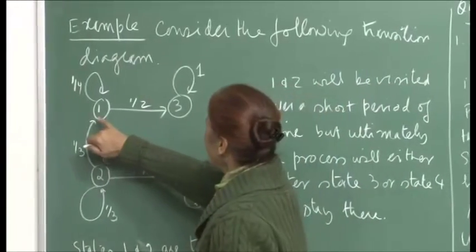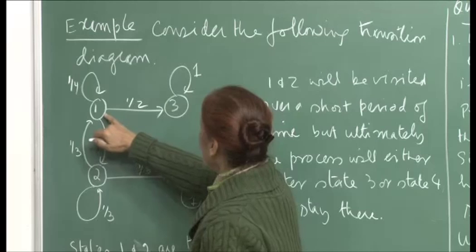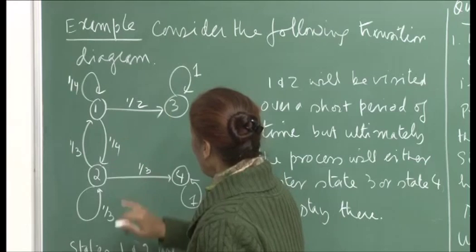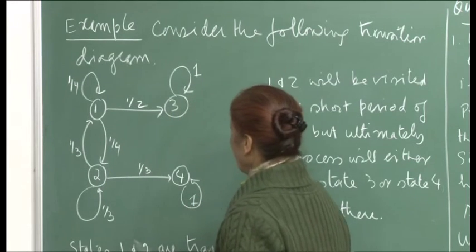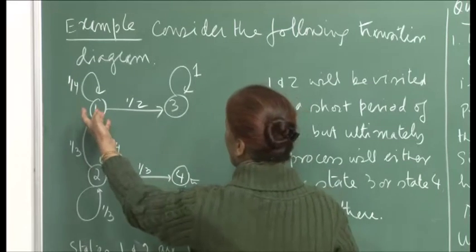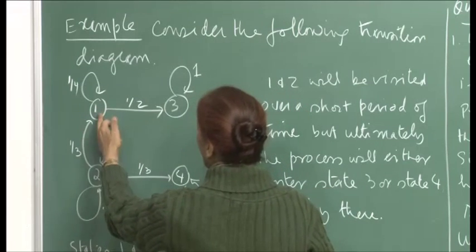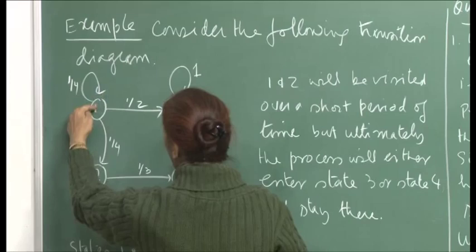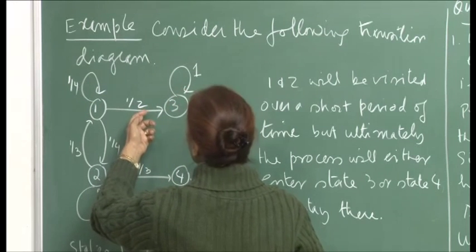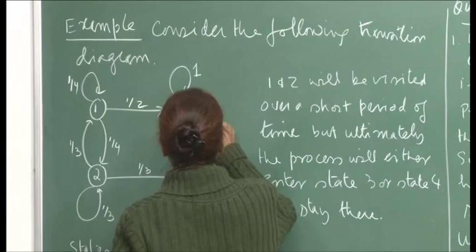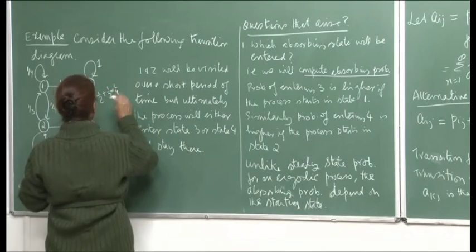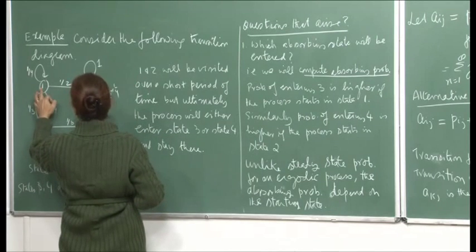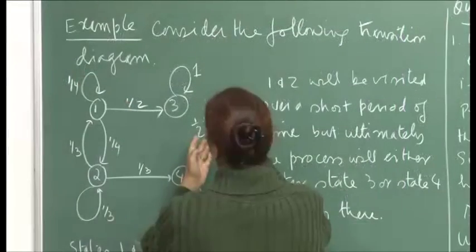If you are in state 1, then the probability of transitioning to 3 seems higher than transitioning to 4. If it happens in 1 step, this probability is half. Or you can go to itself and then transition, so that will be half plus half into 1/4. Let us compute this in 2 steps. Transitioning from state 1 to state 3 in 2 steps: half plus half into 1/4. But if you are in 2, transitioning from 2 to 3 cannot be done in 1 step.